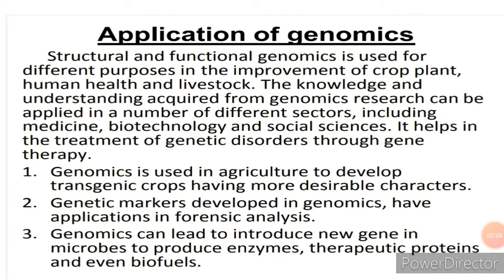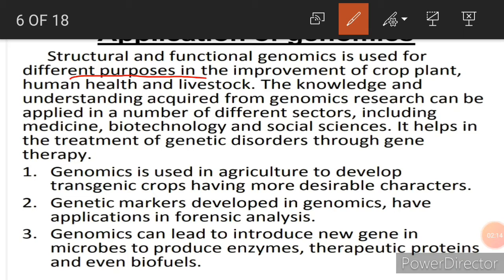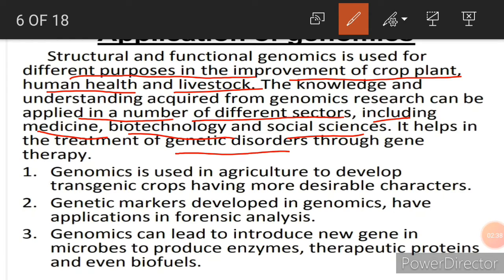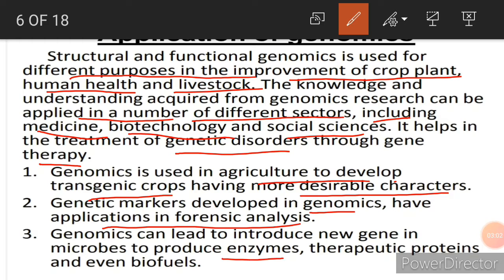The applications of structural and functional genomics are used for different purposes in the improvement of crop plants, human health and livestock. Knowledge from genomics research can be applied in medicine, biotechnology and social science. It helps in the treatment of genetic disorders through gene therapy. Genomics is used in agriculture to develop transgenic crops with more desirable characters. Genetic markers developed through genomics have applications in forensic analysis, and genomics can introduce new genes in microbes to produce enzymes, therapeutic proteins and even biofuels.